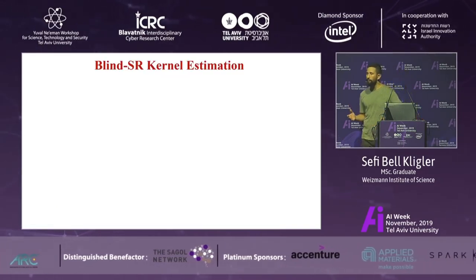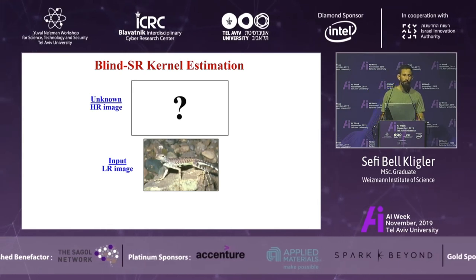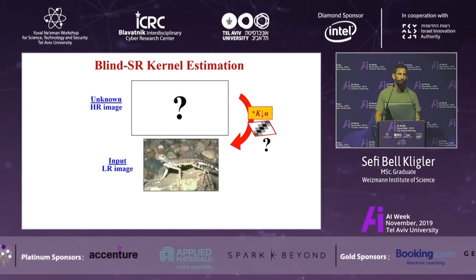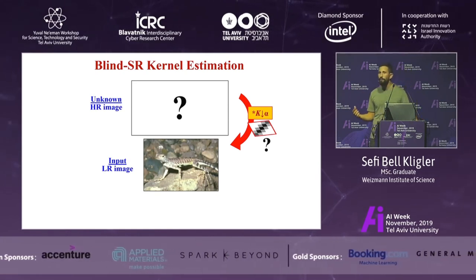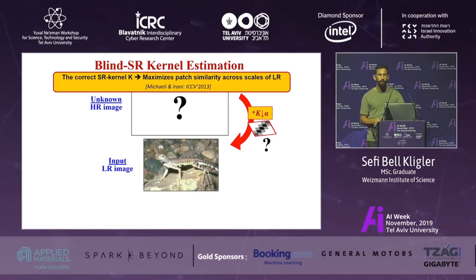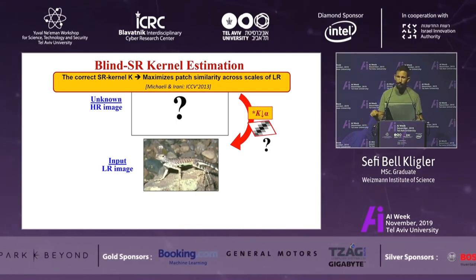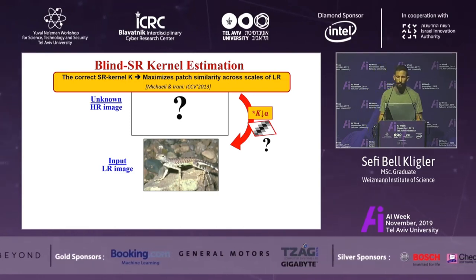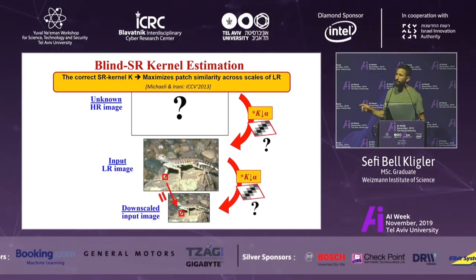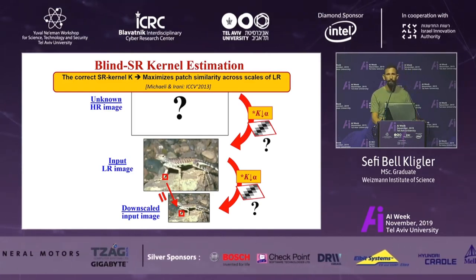What is the super-resolution kernel and how do we estimate it? Going back to the problem definition, the input image and the unknown high-resolution image are related by a blur with the kernel K and subsampling — that's the kernel we're trying to estimate. From a 2013 work by Michaeli and Irani, they proved analytically that the correct super-resolution kernel maximizes the patch similarity across scales. If we downsample the image again with that same kernel, the patches across scales will be maximized; if we use a different kernel, they will not be.